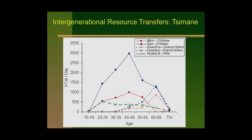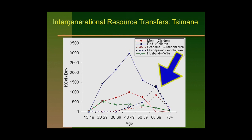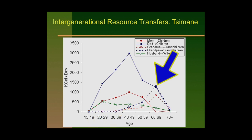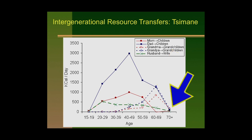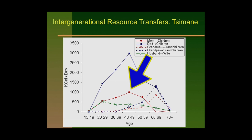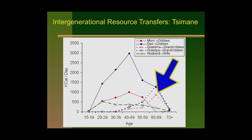This graph looks at the Tsimane flows from mom to children, dad to children, grandma to grandchildren, grandpa to grandchildren, and husband to wife. The biggest flows are from father, peaking at around 3,000 calories per day to his children, dropping as they get older. He then starts giving to grandchildren—the dotted blue line—peaking in his 60s and then dropping. Women show a similar age peak, just lower, and a similar age peak in grandchildren food transfers. At about age 70, people no longer have net transfers downward—they can basically only produce what they consume.